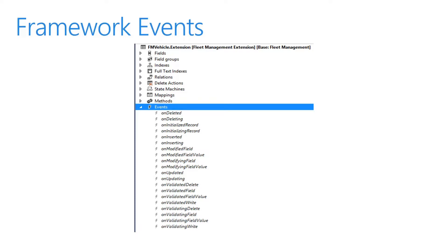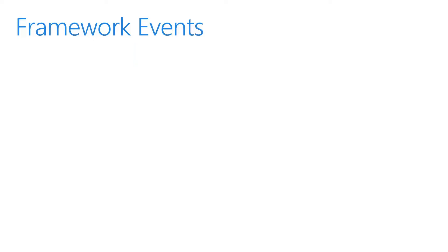Under an events collection node in the designer, you can see this in the screenshot — we have a table open and there is an events node where we can see all of the events for a table. In this example we're looking at a table extension that shows the events defined by the framework and the delegate methods defined by application developers. Events are exposed on the designer on different element and sub-element types, such as table events, form events, form data source events, and form control events.